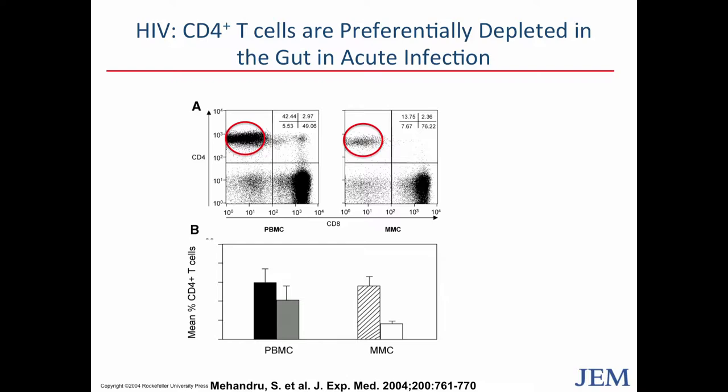What they see is that if you just take an average of CD4 cells, there is a loss of CD4 cells in acute infection within the first months in the blood, but in the gut tissues there's a much more dramatic loss. And so this led to the concept, not just for SIV but for HIV as well, that it is very much a gut infection.